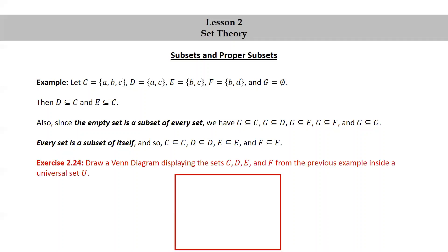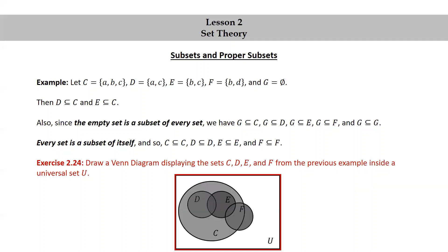One more exercise. Draw a Venn diagram displaying the sets C, D, E, and F from the previous example inside a universal set U. Go ahead and pause the video, try and draw your own Venn diagram, and then resume the video to compare it to mine. Okay, here we have a Venn diagram representing this situation. Notice that D and E are both subsets of C. There is some overlap between D and E — they have little c in common, so I made sure that they overlap. There's also some overlap between E and F; they have b in common, which is inside the set C, so the overlap is inside the set C there. And there's a little piece of F that's outside of C, because F is not a subset of C.